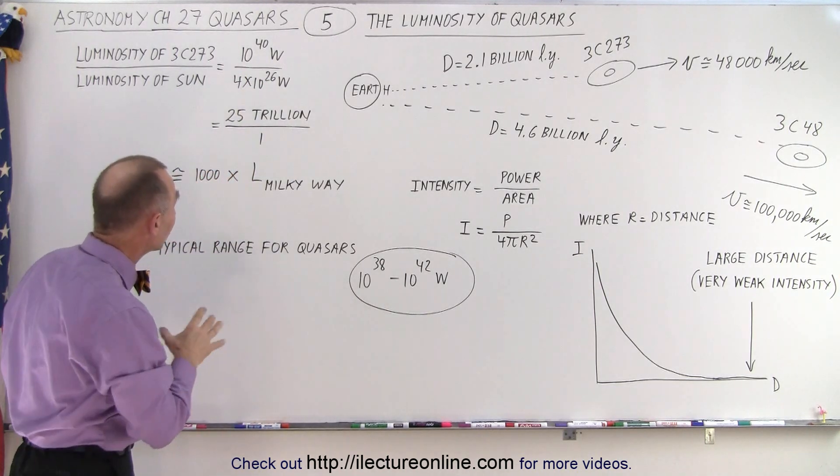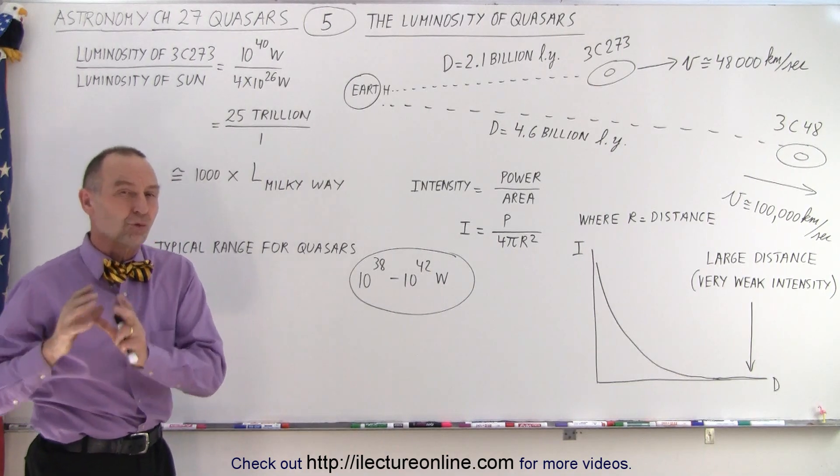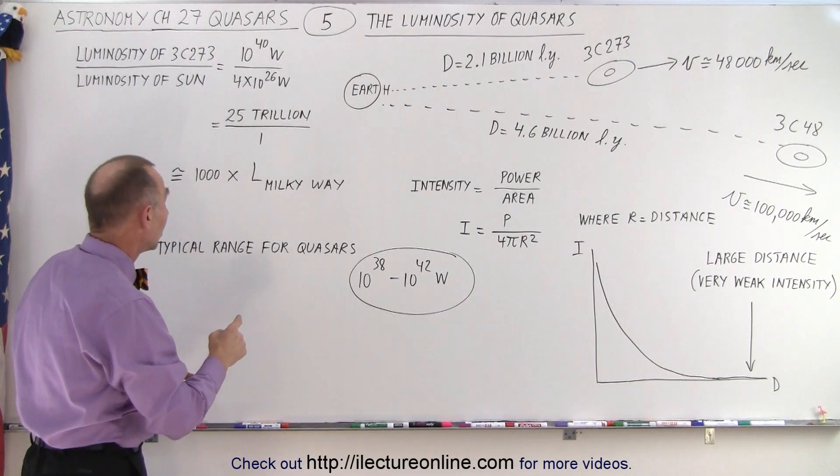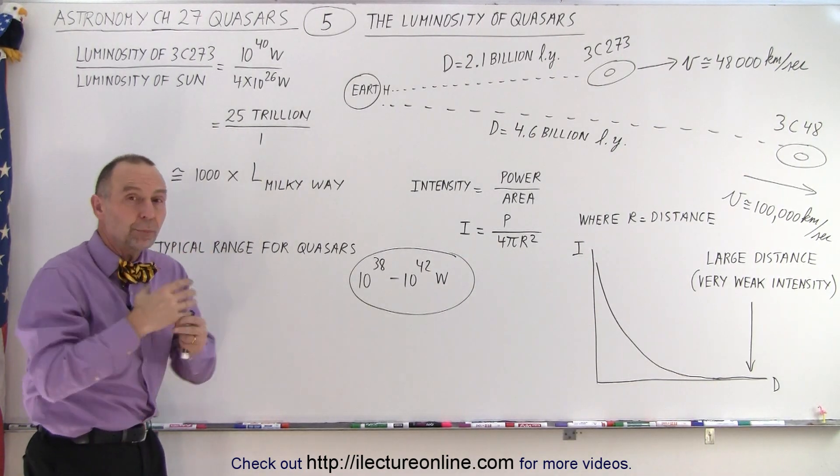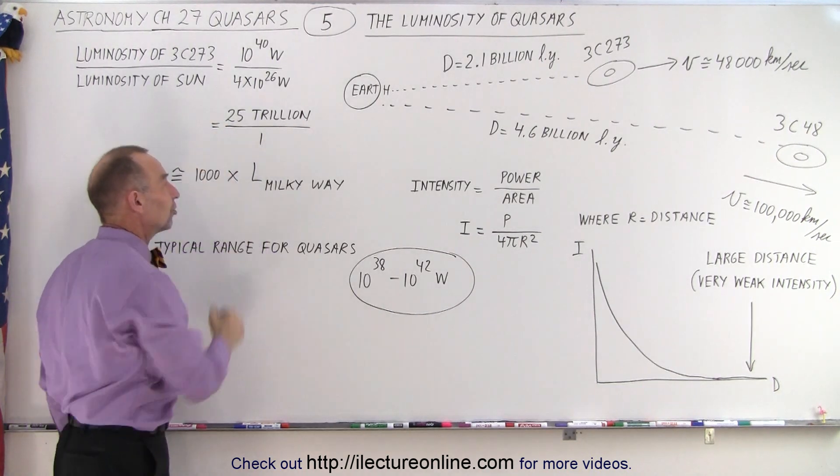That's a ratio of 25 trillion to 1. In other words, that object, that quasar, was putting out as much energy as 25 trillion suns.